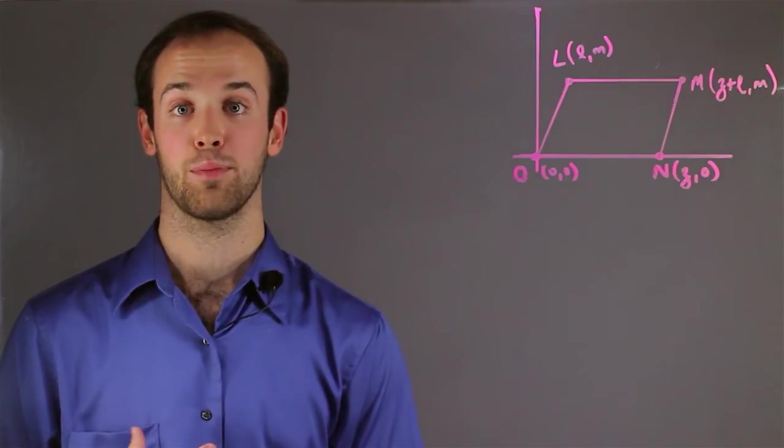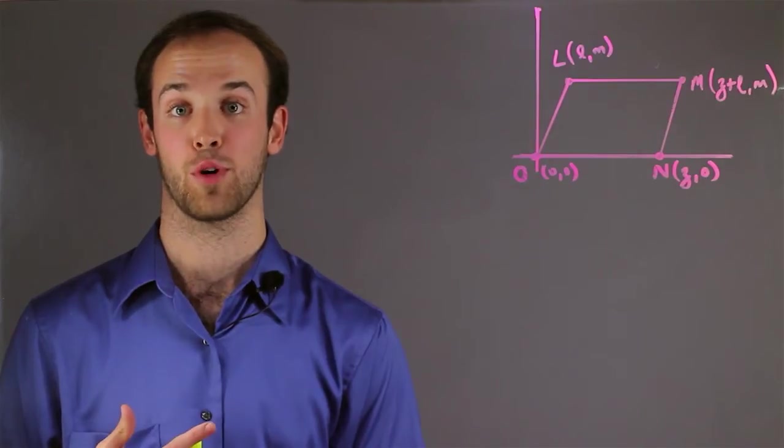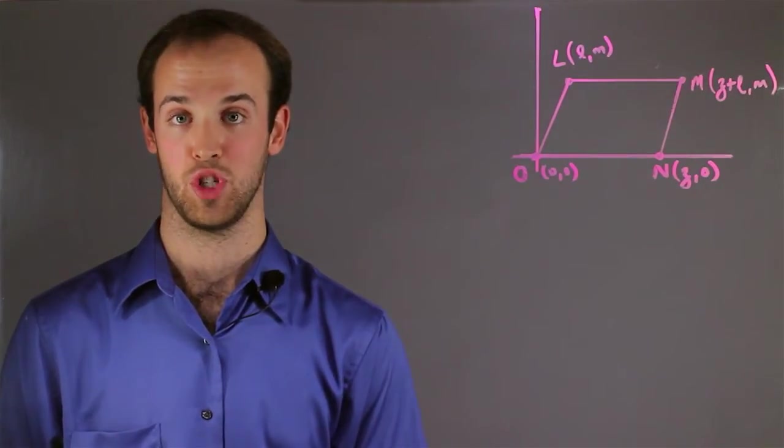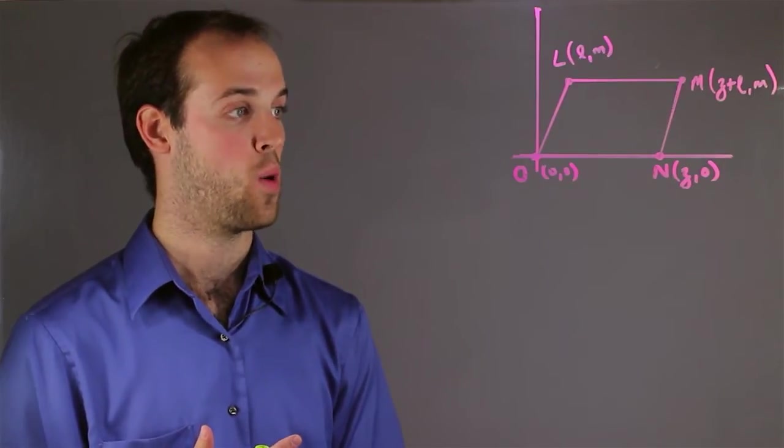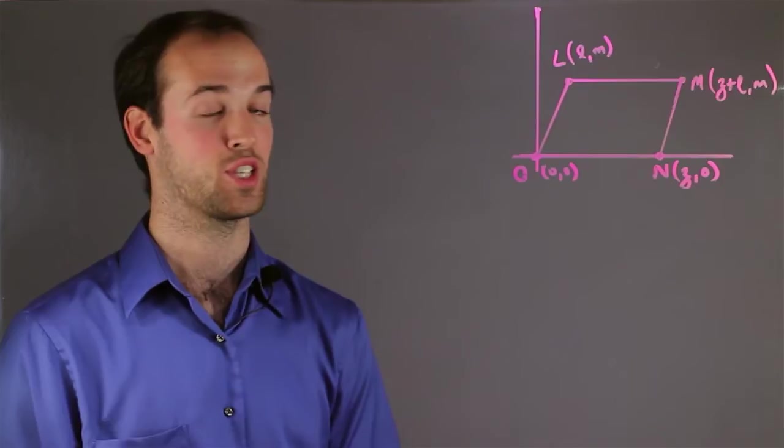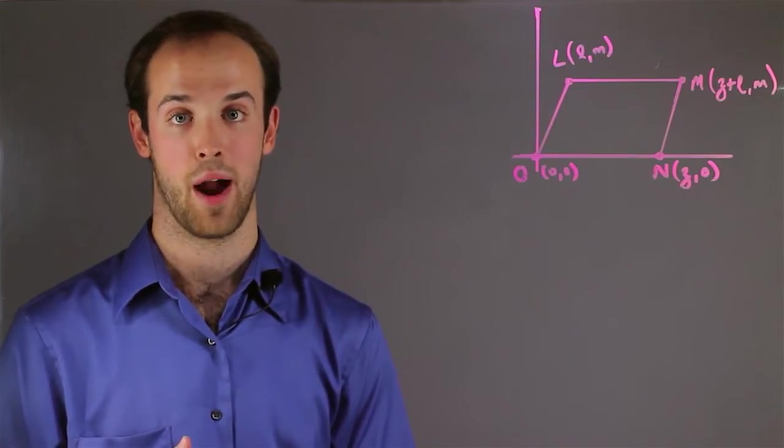Well, I can prove something's a parallelogram if I can prove that both sets of opposite sides are parallel to each other. Let's start with the tops and bottoms, LM and ON, and if I can prove that their slopes are the same, then they must be parallel.